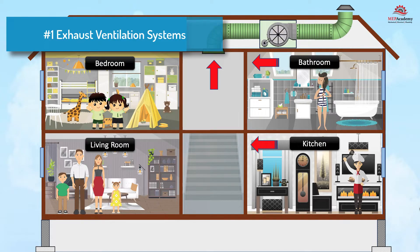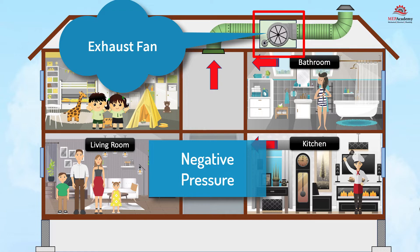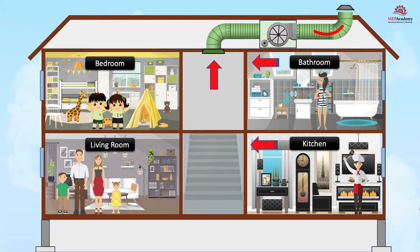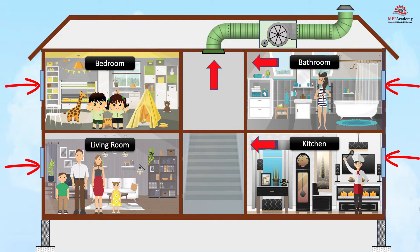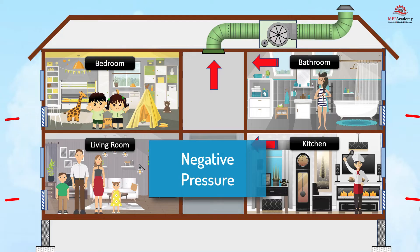Exhaust Ventilation Systems: Using exhaust as the primary method of ventilation requires that an exhaust fan creates a negative pressure within the space. The exhaust fan will pull air from the space and exhaust it outdoors. A path for outdoor air to get into the building must be created. The makeup ventilation air can come from leaks in the building construction such as doors and windows, or from the installation of passive vents. When the exhaust fan is running, it creates a negative pressure causing air to be drawn into the home through the cracks and vents.